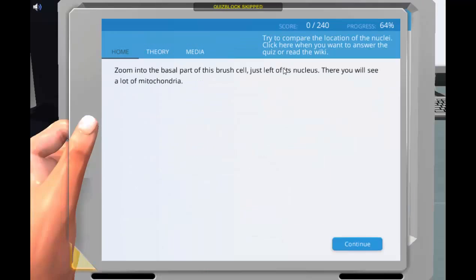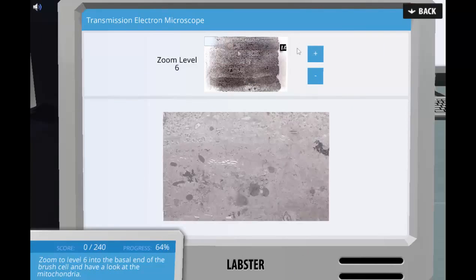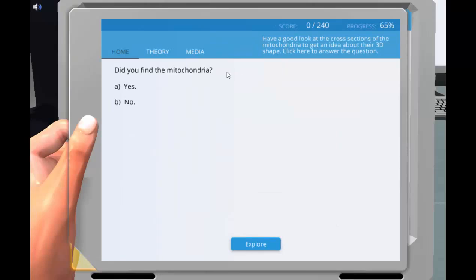They can zoom in and out and observe different cellular structures, for example, the microvilli, mitochondria, and the junctions between cells.